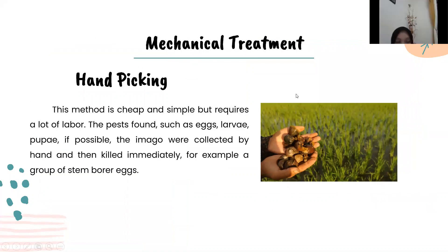For mechanical treatment, the first method is hand picking. This method is cheap and simple but requires a lot of labor. Pest forms such as eggs, larvae, and pupae — and if possible the imago — are collected by hand and then killed immediately. For example, groups of stem borer eggs can be collected this way.